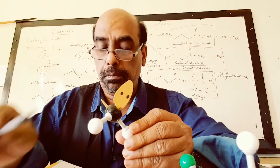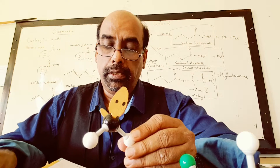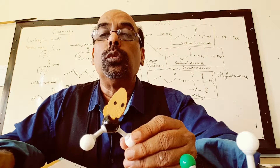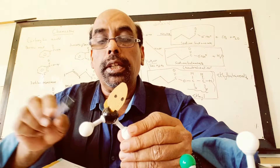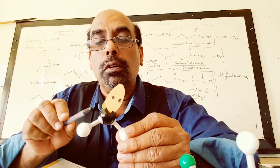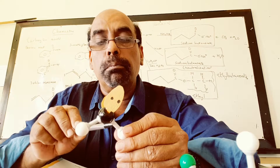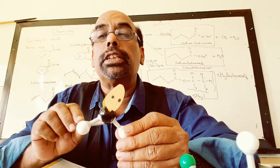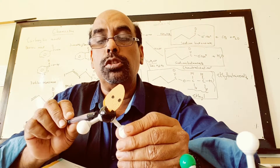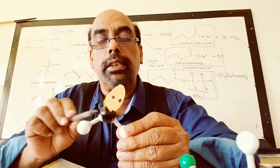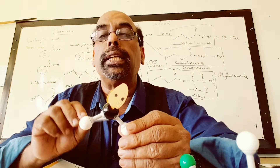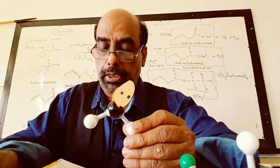There are four bonded electrons in total — two bonded electrons on one side and two bonded electrons on the other.